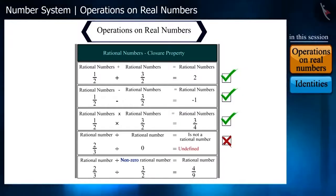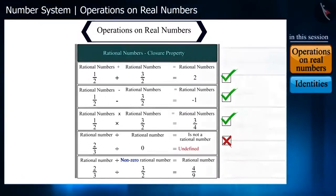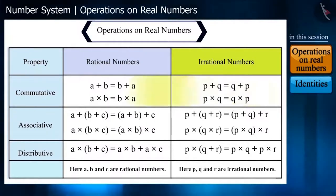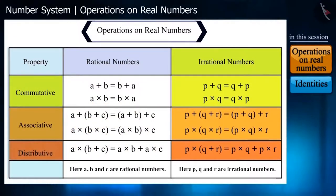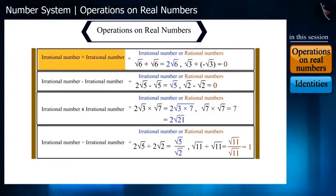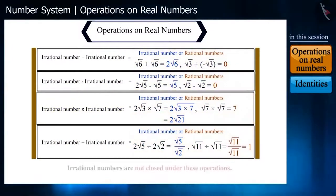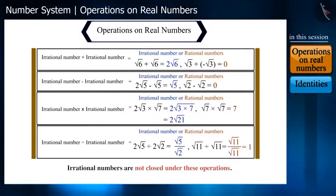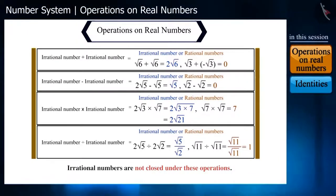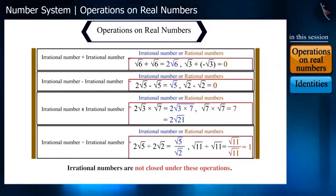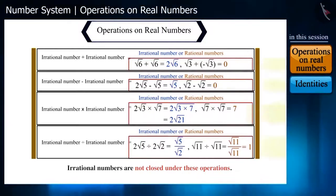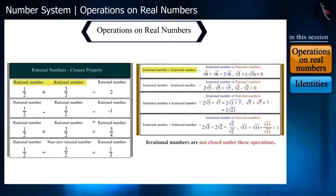Irrational numbers also follow the commutative, associative, and distributive rules for addition and multiplication. However, on adding, subtracting, multiplying, or dividing irrational numbers, the result is not always an irrational number. That means irrational numbers are not closed under these operations, as you can see from these examples — we can get both rational and irrational numbers.